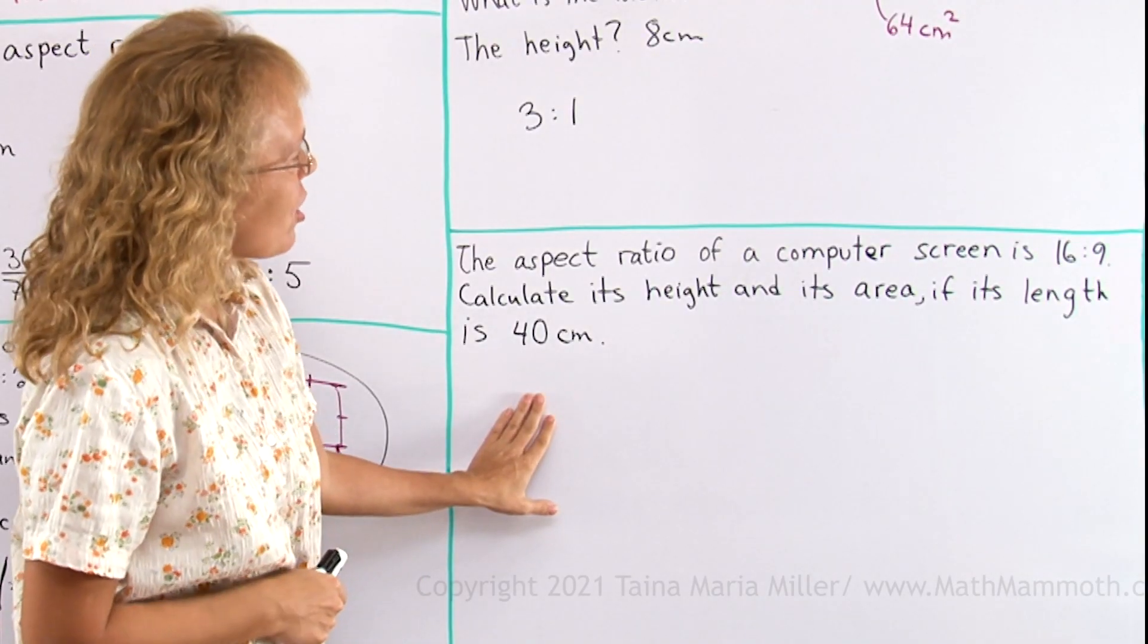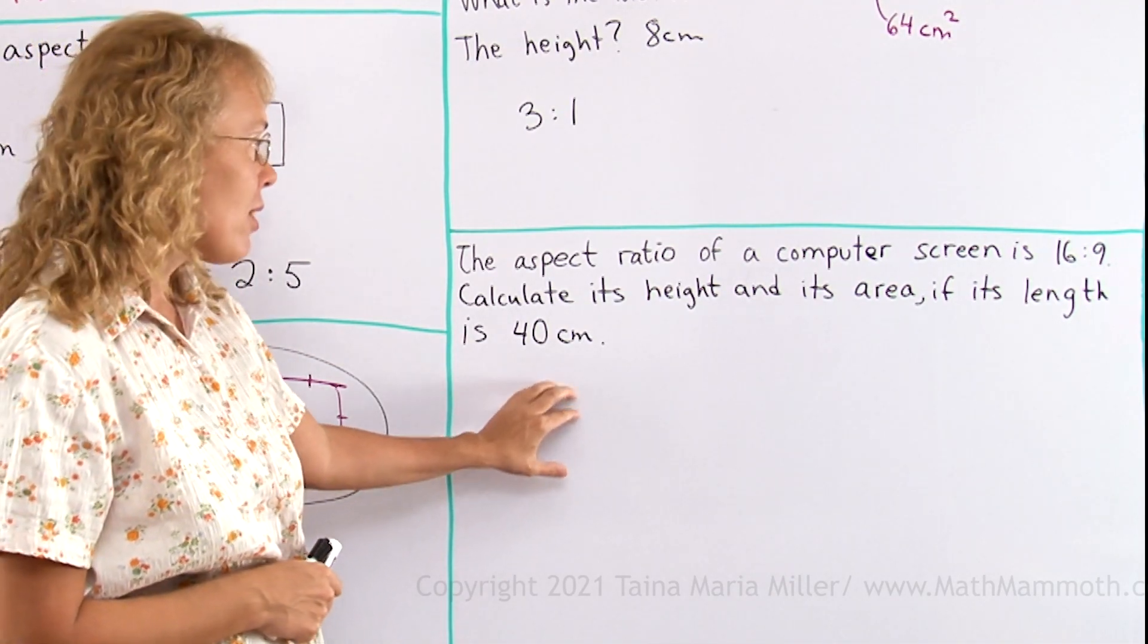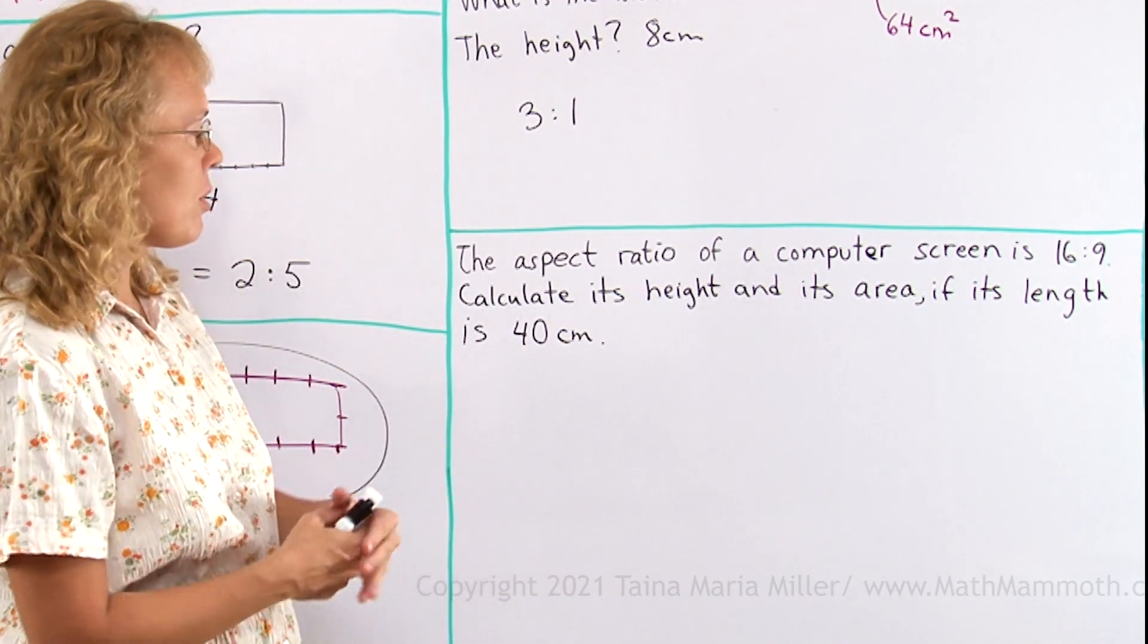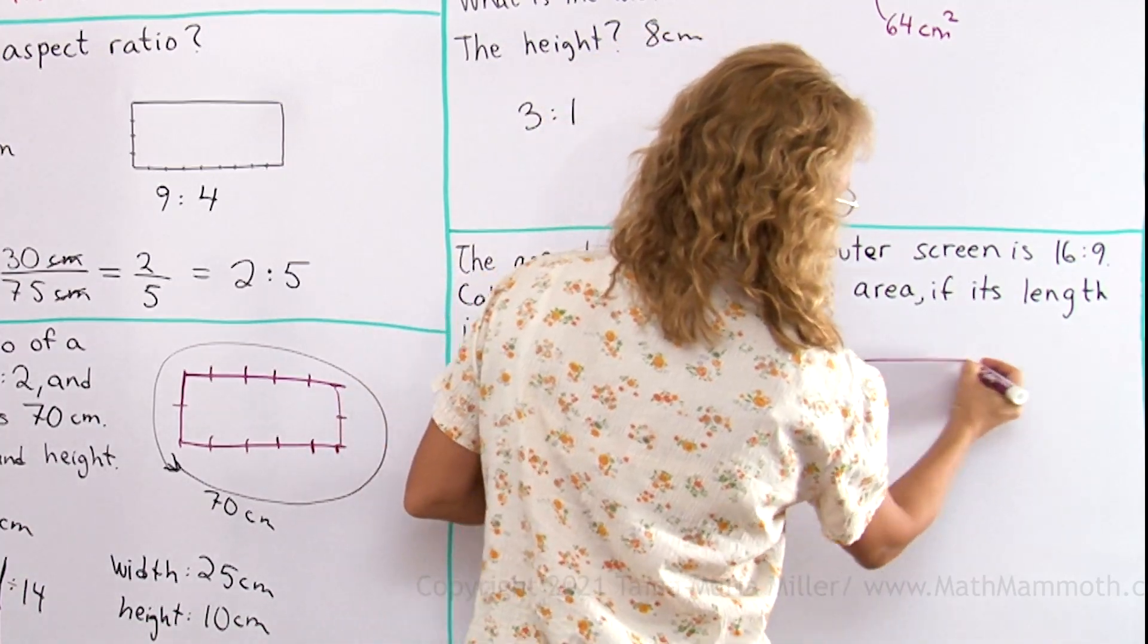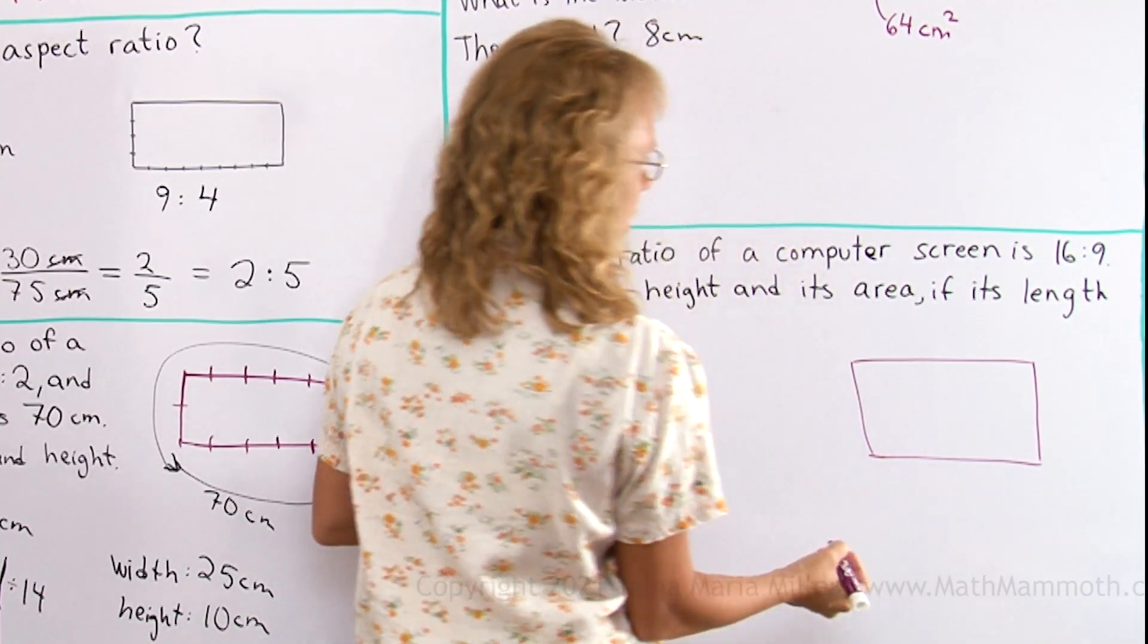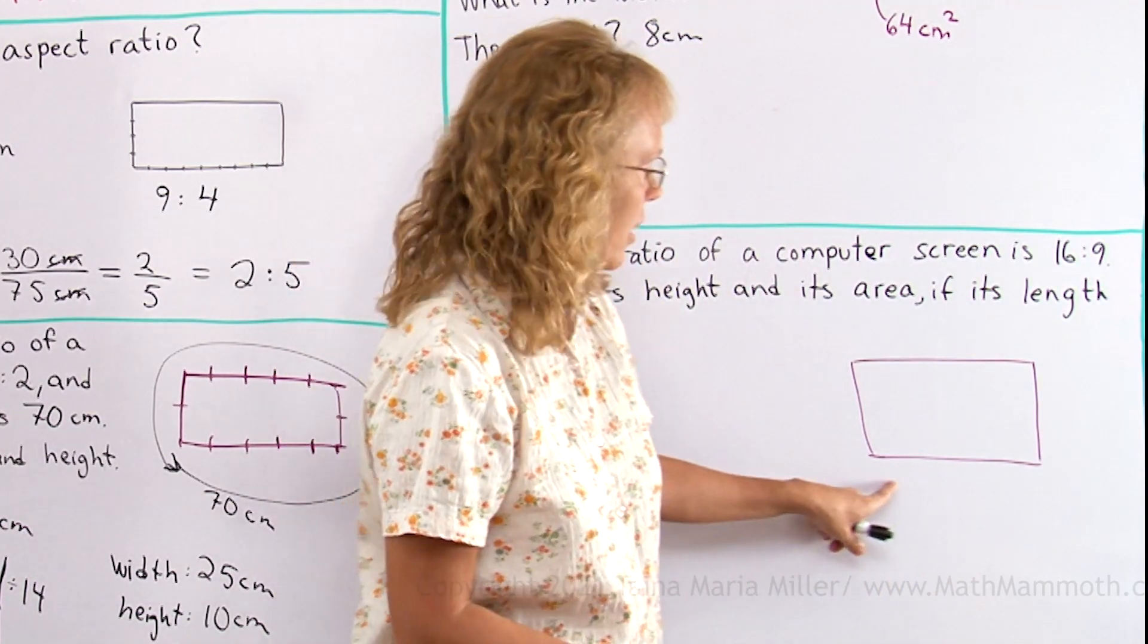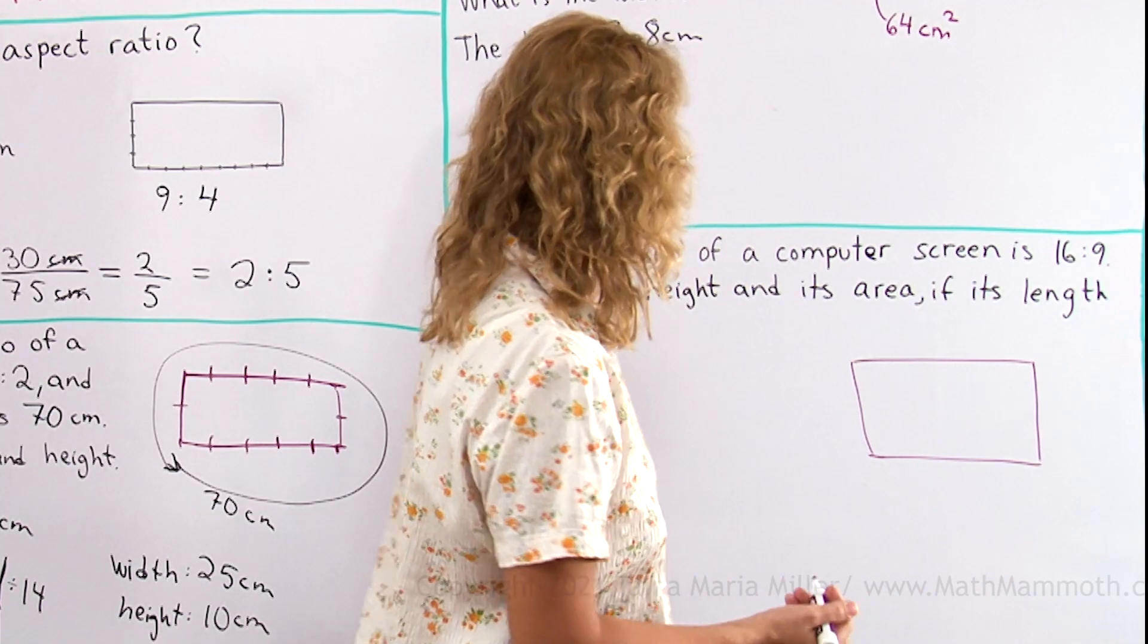The aspect ratio of a computer screen is 16 to 9. And calculate its height and its area. If its length is 40 centimeters. Let me again make a sketch of a rectangle here. Okay, and this is now 16 to 9. So it means I would have 16 as if 16 units going this way and 9 little units going that way.